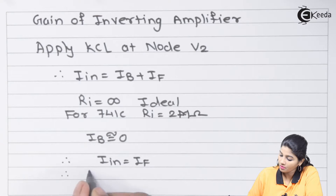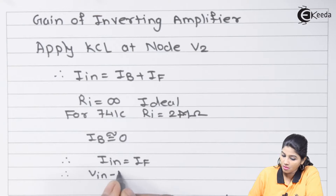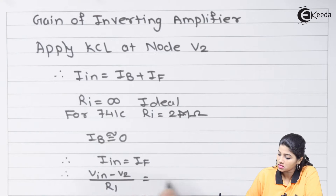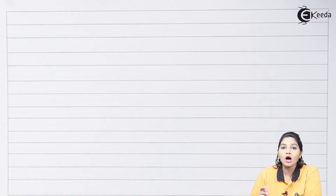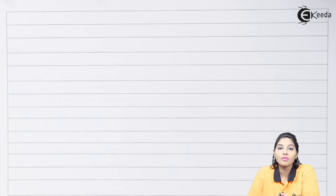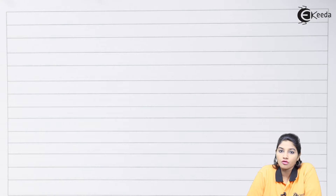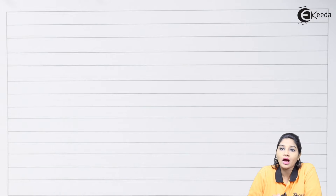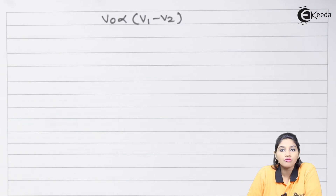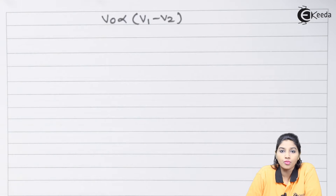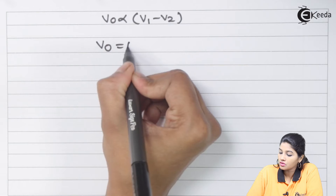Substituting voltage values for I_in and I_f, the equation becomes: (V_in minus V2) divided by R1 equals (V2 minus V_o) divided by R_f. We call this equation number one. We also know that the output voltage of the op-amp is proportional to the difference between voltages at the non-inverting and inverting terminals, so V_o is proportional to (V1 minus V2), and using the open loop gain A, we get V_o equals A times (V1 minus V2).